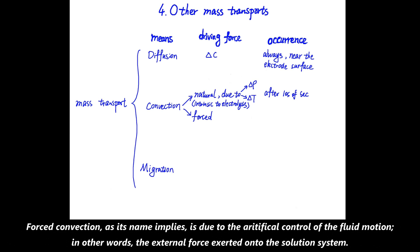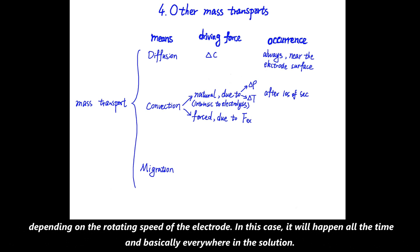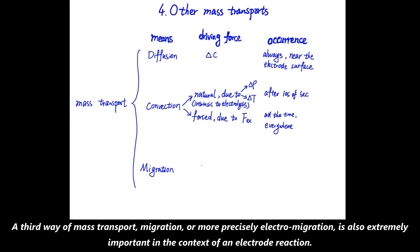Forced convection, as its name implies, is due to the artificial control of the fluid motion. In other words, the external force exerted onto the solution system. For example, in some electrochemistry experiments, rotating disc electrodes are used to generate the controlled mass transport rate of the reaction species depending on the rotating speed of the electrode. And in this case, it will happen all the time, and basically everywhere in the solution.